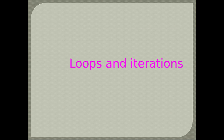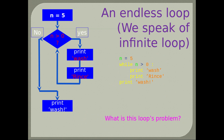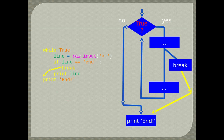Loops and iterations: loops repeat operations and have iteration variables whose value changes with each loop. These iteration variables are often numeric. An endless loop problem: end never goes to a different value and never reaches negative 1, so the loop goes on forever. Ending a loop: the break keyword terminates the current loop and jumps to the next statement immediately after. In this example, if the input equals 'end', the program stops execution.